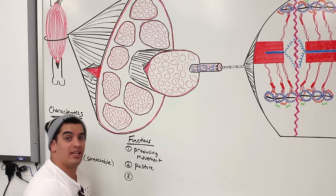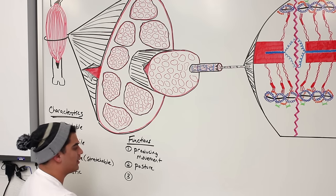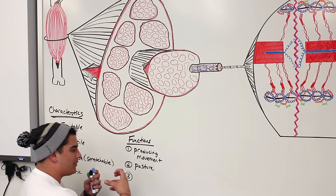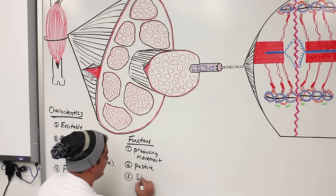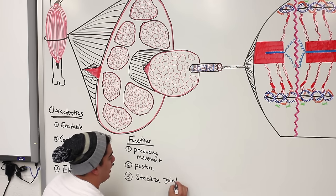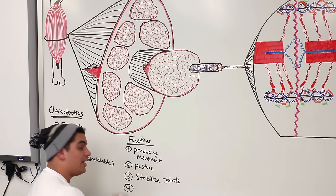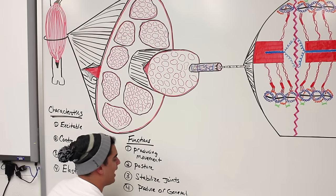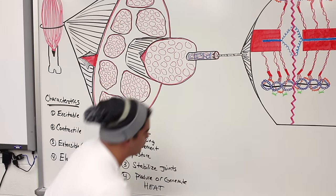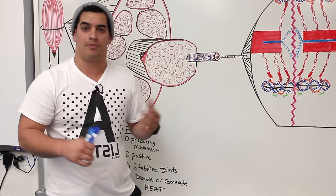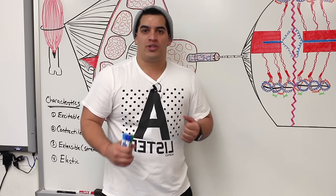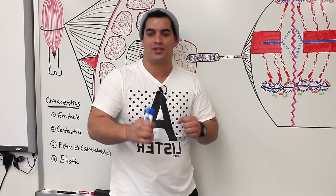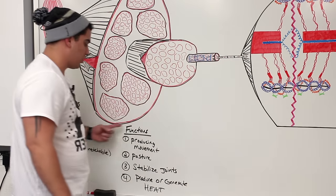Third, muscles wrap around many joints and help stabilize them — because bones are connected by ligaments and other connective tissue, muscles provide additional stabilization to those joints. Fourth, muscles help generate heat. Through cellular respiration, heat is produced as a byproduct. When you're cold and you shiver, those quivering contractions help generate heat.